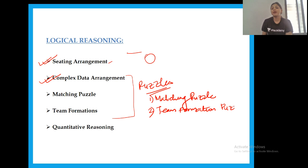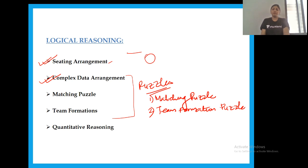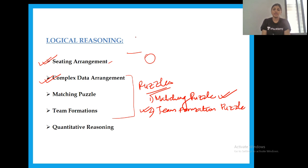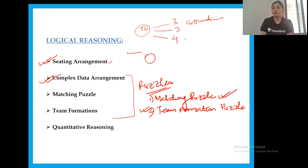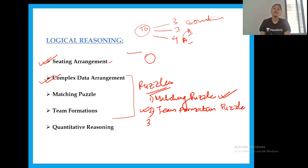In a matching puzzle, you have to match parameters — for example, five people's names, five colors, and five car brands — matching one person with the color they like and the car they drive. The second type is a Team Formation Puzzle, where you are given a set of people — say 10 — who must be divided into groups with given constraints, such as 'A and B cannot be in the same group.'